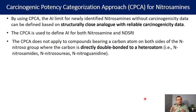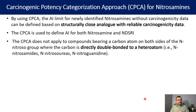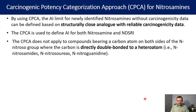However, the CPCA does not apply to compounds bearing a carbon atom on both sides of the nitroso group where the carbon is directly double bonded to a heteroatom. Examples given in the guideline include N-nitrosoamides, N-nitrosoureas, and N-nitrosoguanidines. For these compound types, the potency categorization approach will not work.